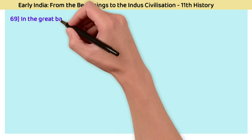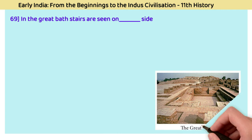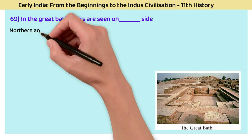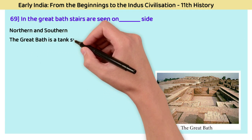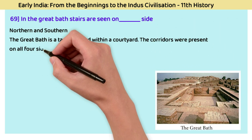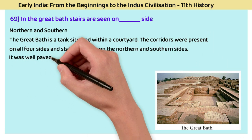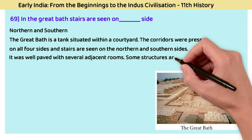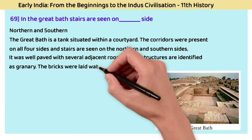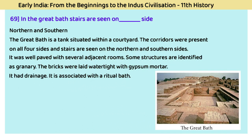Question 69: In the Great Bath, stairs are seen on which sides? The answer is the northern and southern sides. The Great Bath is a tank situated within a courtyard, with corridors on all four sides. Stairs are seen on the northern and southern sides. It was well paved with several adjacent rooms, and some structures are identified as granaries. Bricks were laid watertight with gypsum mortar, and it had drainage. It is associated with ritual bathing.